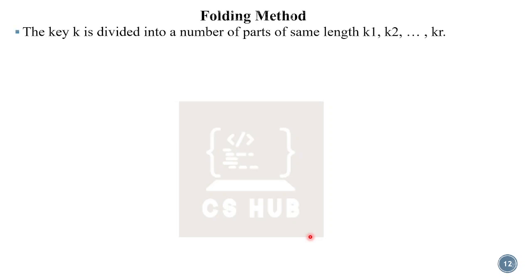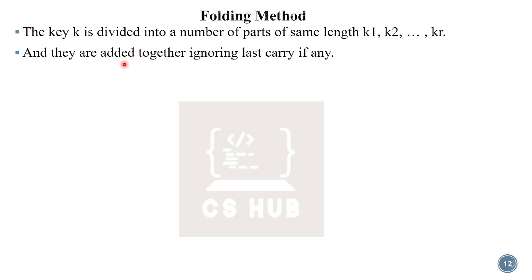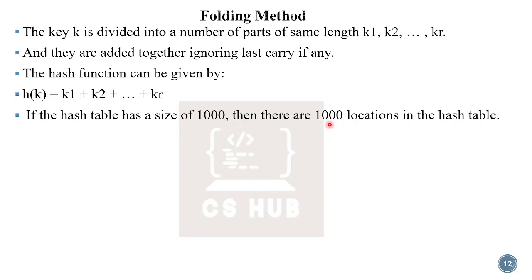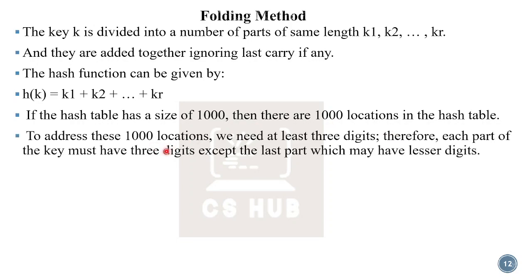The last method is the folding method. We divide the key into parts of the same length, then add them together, ignoring the last carry. The hash function is h(k) = k1 + k2 + ... + kr. If the hash table has a size of 1000, there are 1000 locations, and we need at least 3 digits — so we divide the key into parts of 3 digits each.